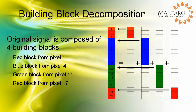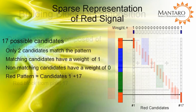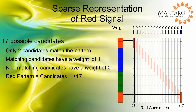There are two red blocks that comprise pixels 1 through 3 and 17 through 19. The blue block occupies pixels 4 through 10 and the green pixels 11 through 16. To create the sparse representation of the red blocks, we consider all of the possible arrangements of red blocks for the 19 pixel signal. Only two locations are included in the signal and these columns are signified with a weight of 1. All other possible locations are indicated with a weight of 0.